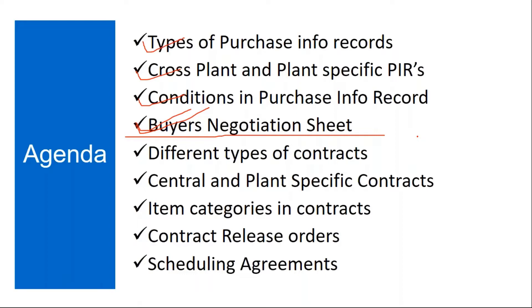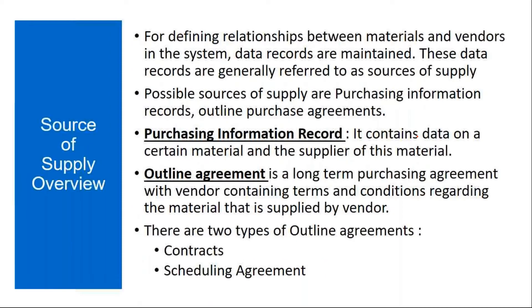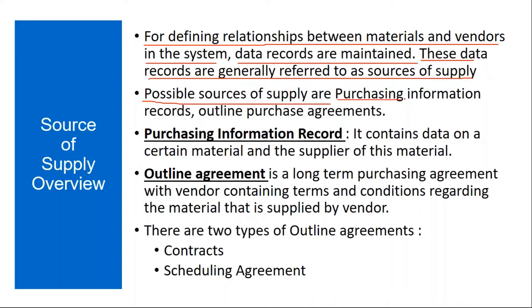Today we will cover the purchase info record. For defining relationships between materials and vendors in the system, data records are maintained. These data records are generally referred to as source of supply. Possible sources of supply are purchasing information records and outline purchase agreements. Today we will be covering purchase info records, and tomorrow we will see outline agreements.